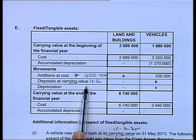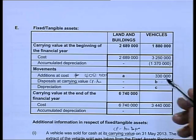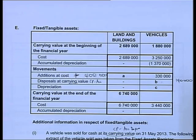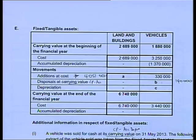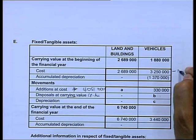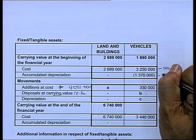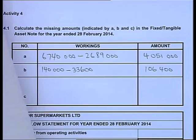Just to clarify: if it says identify the disposal at carrying value, you determine the book value, which is cost price minus accumulated depreciation. The cost price of the vehicle was 140,000, and the accumulated depreciation was 33,600. Very important: on the cost row above, we now have to take away 140,000 - that is the cost price of the item we are selling. And next to the accumulated, we take away 33,600.